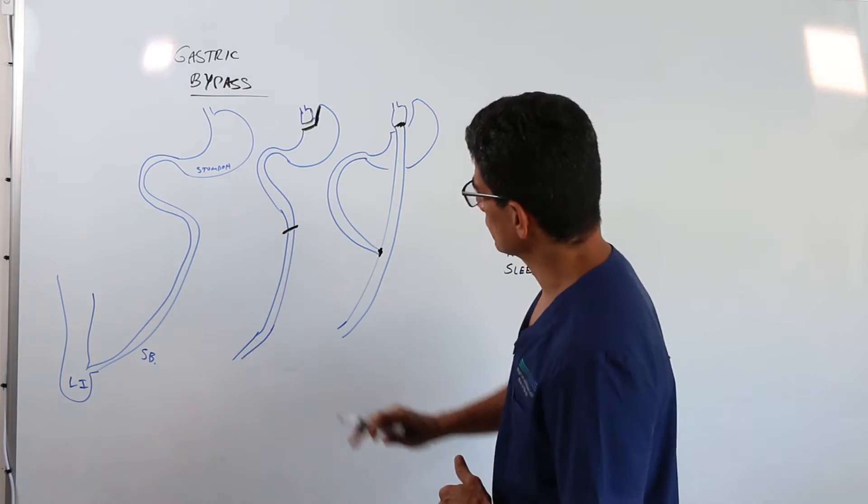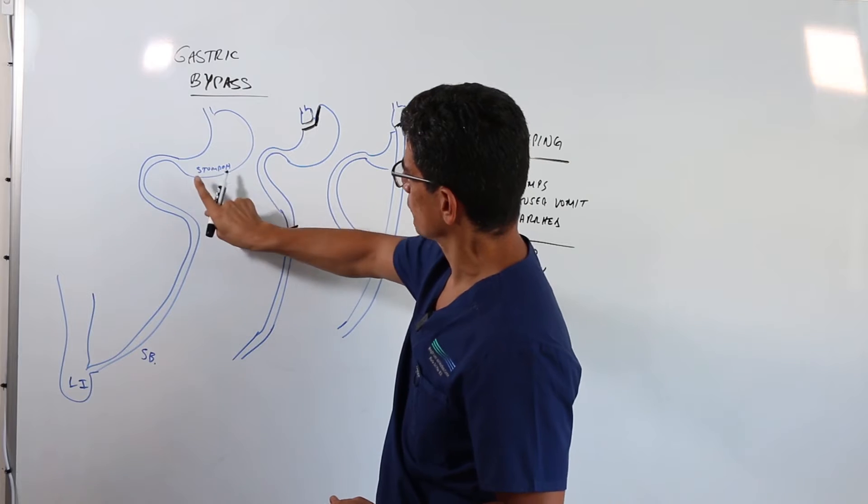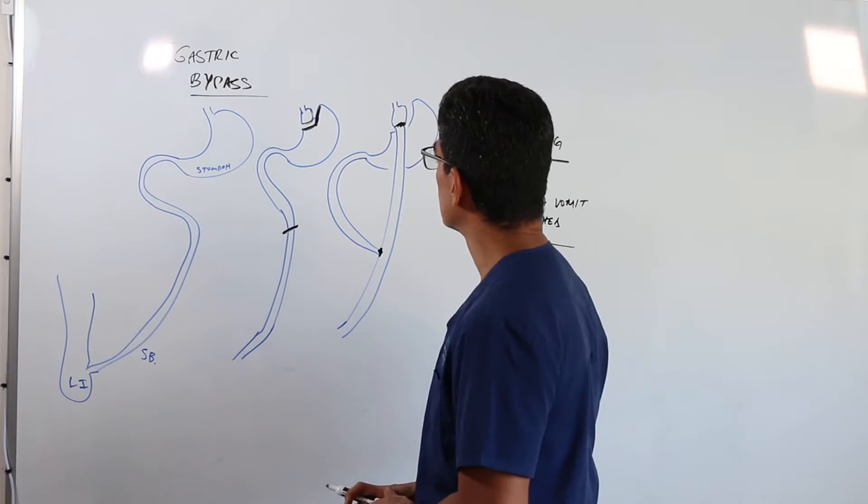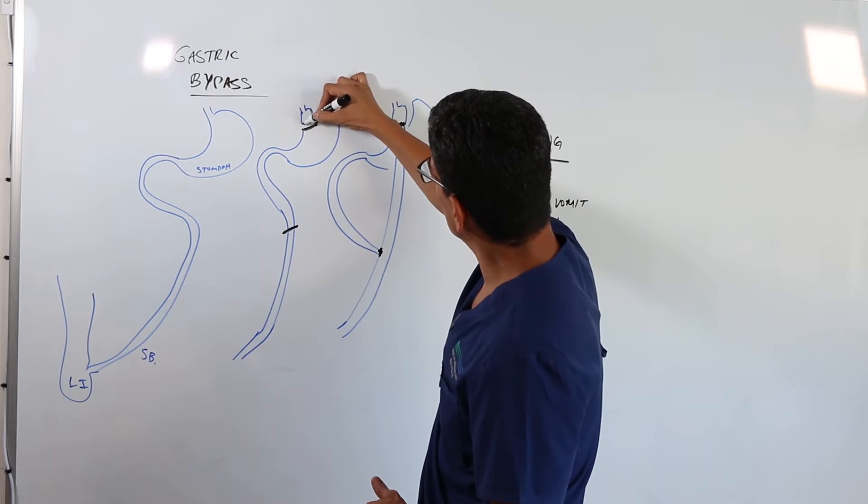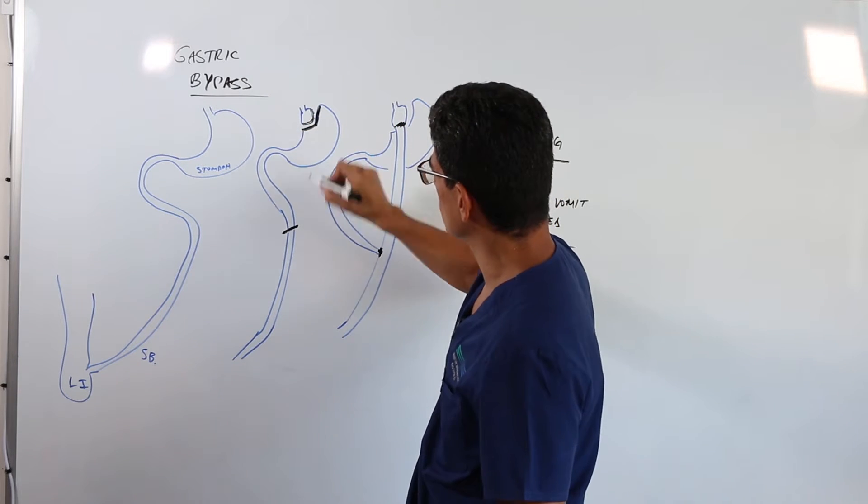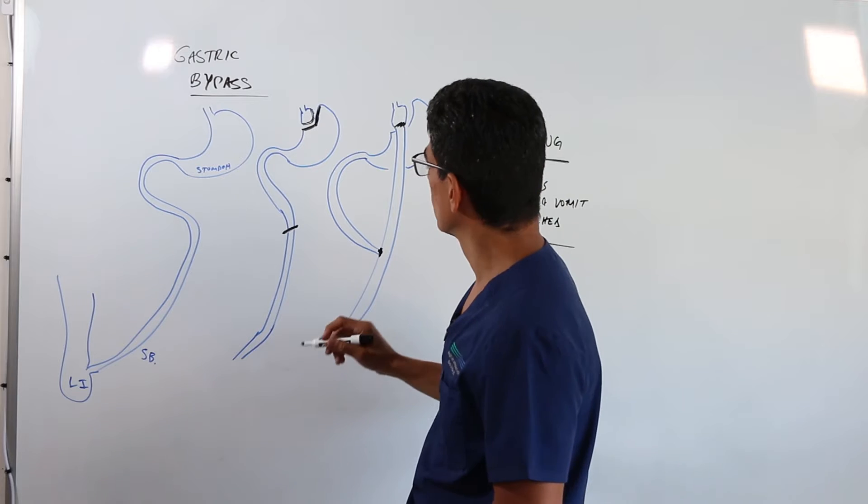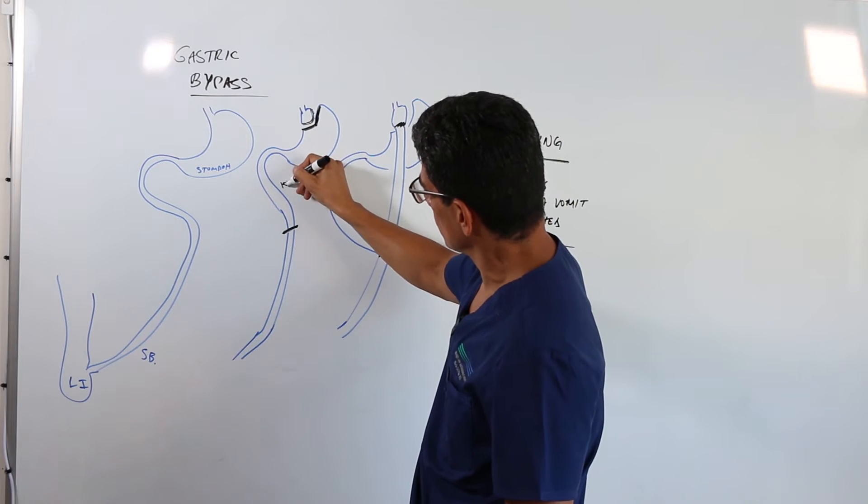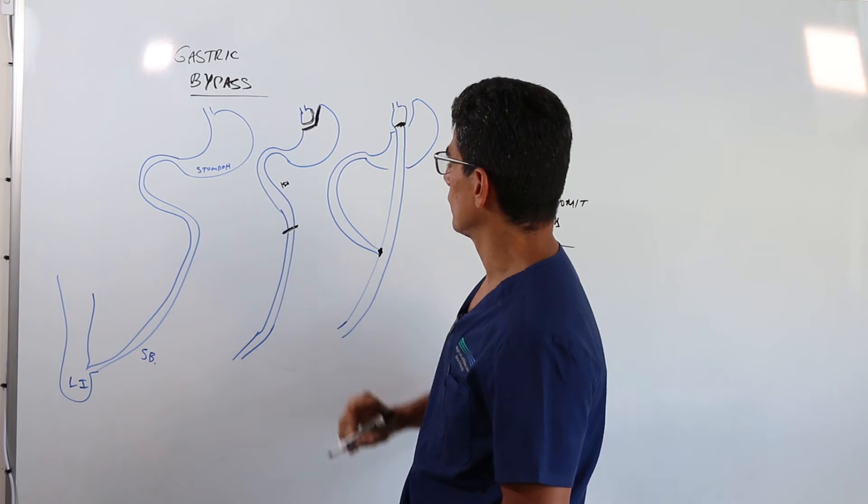Basically it involves, this is your stomach and then it's followed by your large intestine, followed by the, I'm sorry, the small bowel, followed by the large intestine. So when we do a bypass, we basically carve a small stomach the size of a large egg out of the big stomach, nothing is removed. And then we count about 100, 150 centimeters and we divide the bowel.